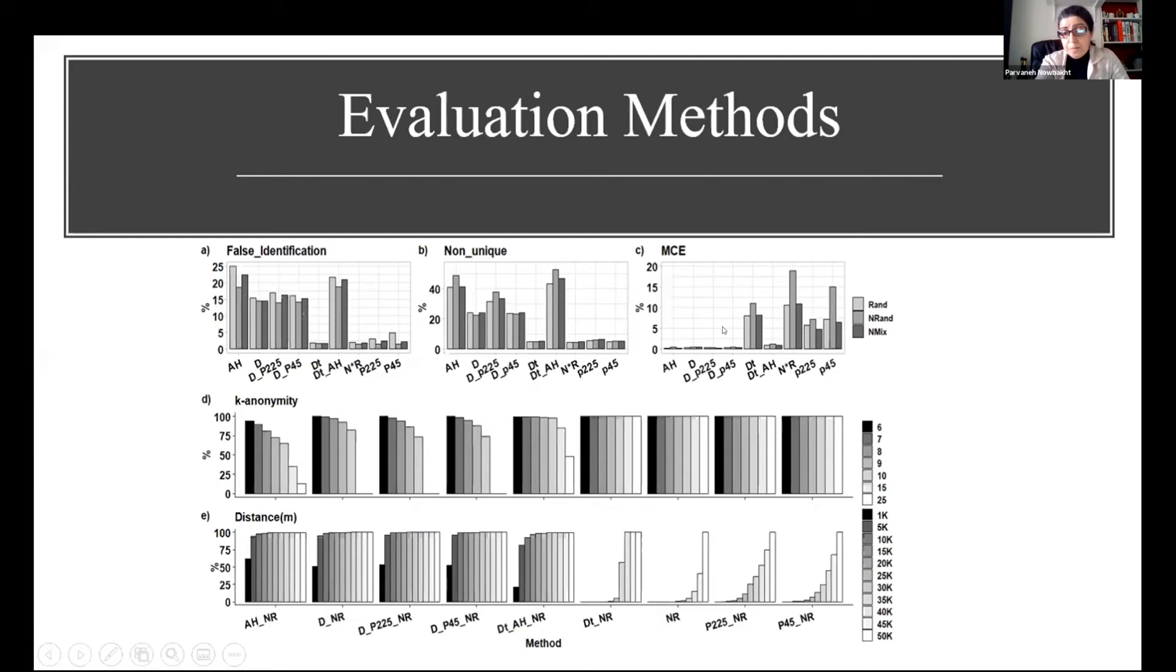Two other metrics: false identification, which is the percentage of points where the obfuscated point becomes another original point or falls inside a polygon shape of objects if we consider the polygon nature of an object, for example a fox. And non-unique obfuscation is the percentage of points where the obfuscated point is not unique.